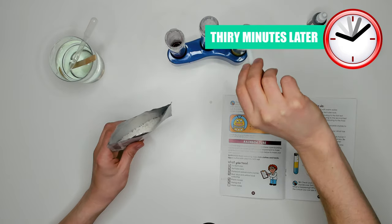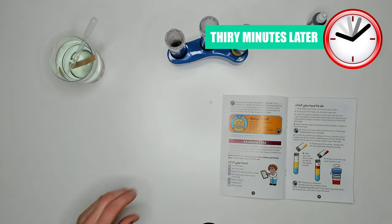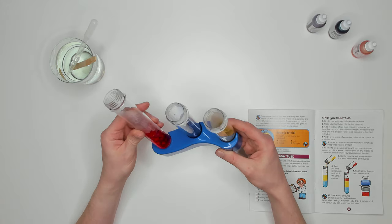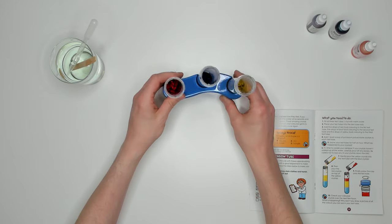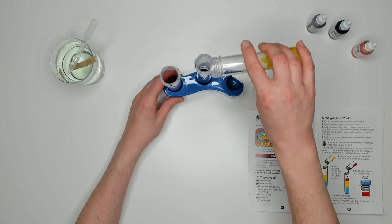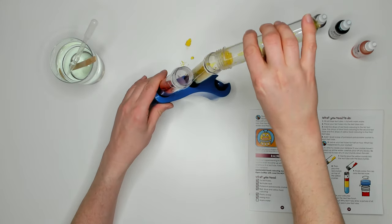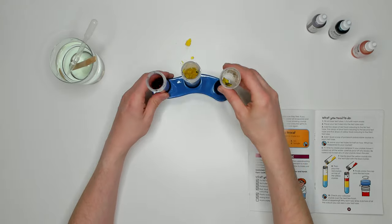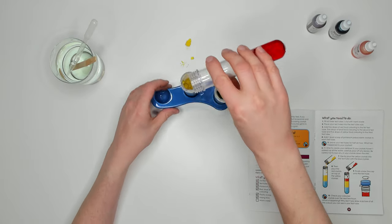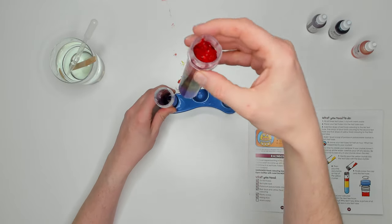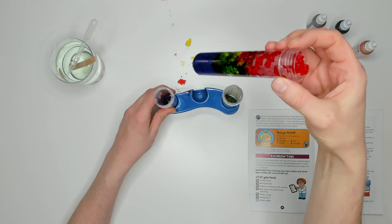30 minutes later. The crystals have soaked up all the colored water and now we're going to combine them together into one tube. First empty the yellow into the blue. Whoa! I spilled it again. Then the red into the same tube. Oh no more spillages! Screw the lid on and then leave for one hour.